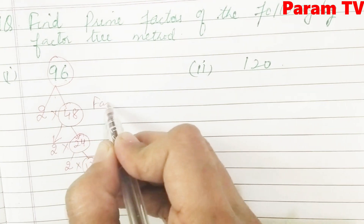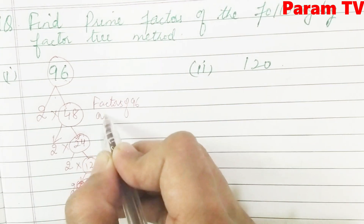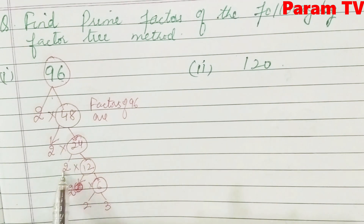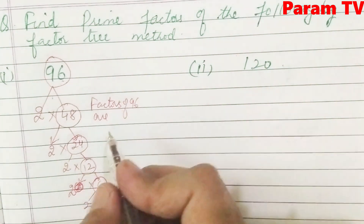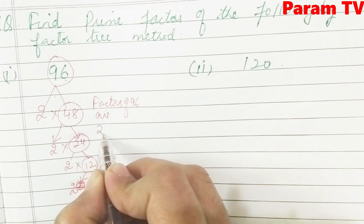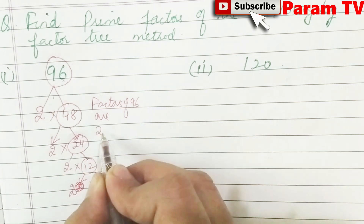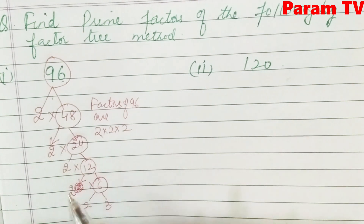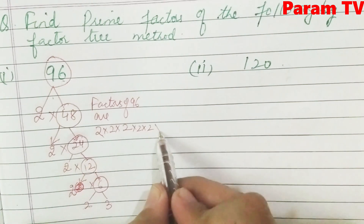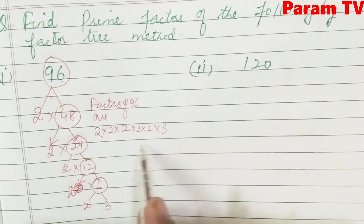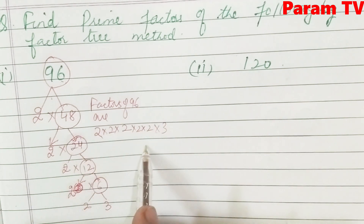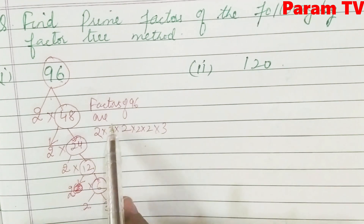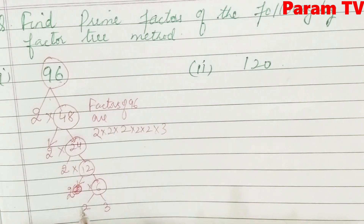So the prime factors of 96 are the factors which don't have a circle: 2, 2, 2, 2, 2, 2, and 3. These prime factors, when multiplied together — 2 × 2 × 2 × 2 × 2 × 2 × 3 — you will get the same number again. This is prime factorization by the factor tree method.